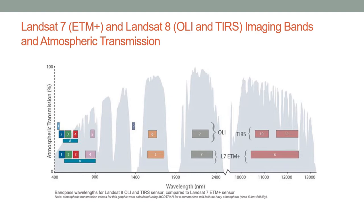Please look up the wavelength intervals of both Landsat 7 and Landsat 8 in your textbook. Landsat 8 also has thermal infrared sensors — bands 10 and 11 — which sense in the thermal-infrared region. Thermal-infrared is what we as human beings literally sense as heat.